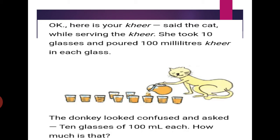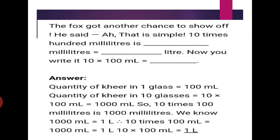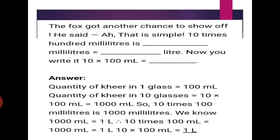The donkey looked confused and asked: 10 glasses of 100 ml each — how much is that? The fox got a chance to show off. He said: That is simple. 10 times 100 ml each means 10 into 100, that is equal to 1000 millilitres, or 1 litre.